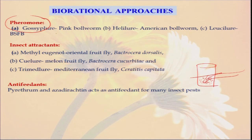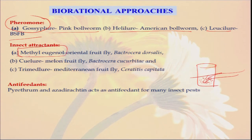Similarly, there are specific pheromone lures — Gossyplure for pink bollworm, Helilure for Helicoverpa armigera, and Leucilure for BSBC. One very important attractant is methyl eugenol, which is highly used with most of our pheromone traps. Only 10 to 15 pheromone traps per hectare basis is sufficient. They will reduce the insect population by more than 50 to 60 percent, and this is totally economically safe — you do not have to apply any type of insecticide. So we have to always promote this type of new science and different types of bio-rational approaches for our organic farm.